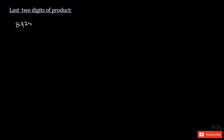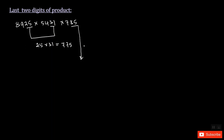Let's take another example: 8925 times 5431 times 785. What would be the last two digits of this product? Take the last two digits and multiply: 25 times 31 gives 775. Now take that result and multiply with 85, since there are no other numbers available to make a pair. Take the last two digits of 775, which is 75, and multiply by 85.